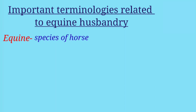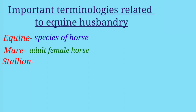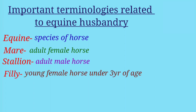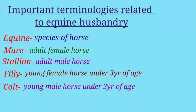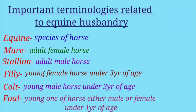Now let's study the important terminologies related to equine husbandry. 'Equine' refers to the species of horse. 'Mare' is an adult female horse. 'Stallion' is an adult male horse. 'Filly' is the young female horse under three years of age. 'Colt' is the young male horse under three years of age.